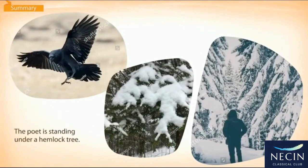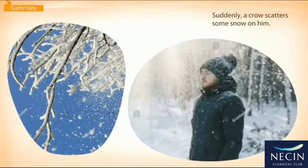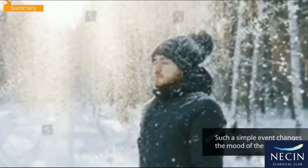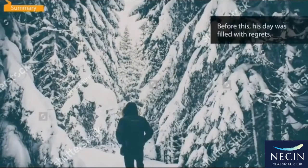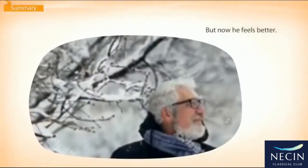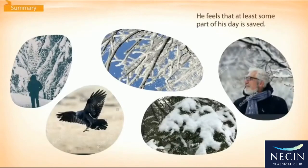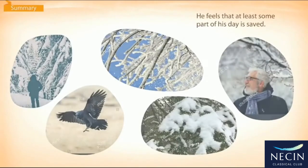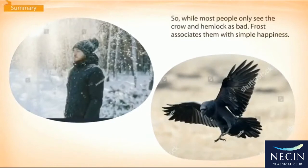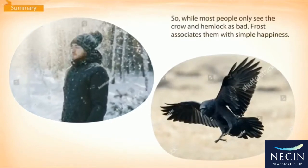The poet is standing under a hemlock tree. Suddenly a crow scatters some snow on him. Such a simple event changes the mood of the poet. Before this, his day was filled with regrets. But now he feels better. He feels that at least some part of his day is saved. So while most people only see the crow and hemlock as bad, Frost associates them with simple happiness.